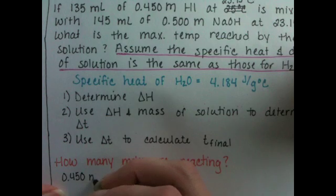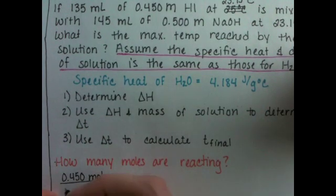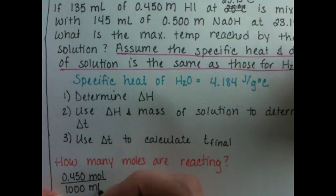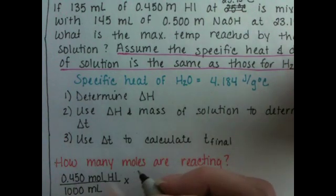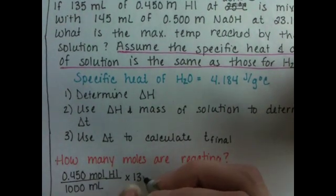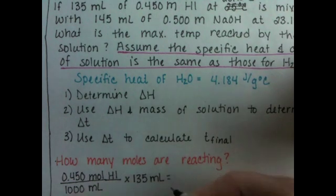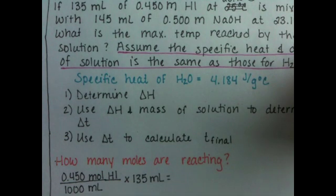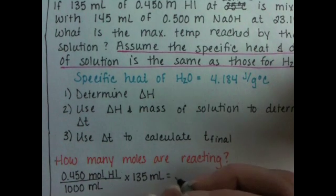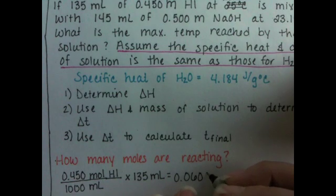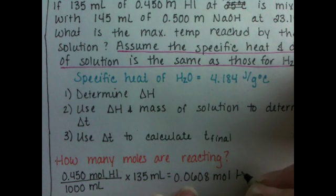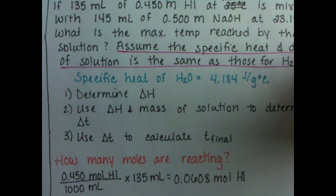Starting with HI, we have 0.450 moles for every 1,000 mL or one liter. And the problem tells us that we have 135 mL. And that turns out to be 0.0608 moles of HI. And that's how much we actually have available to react.